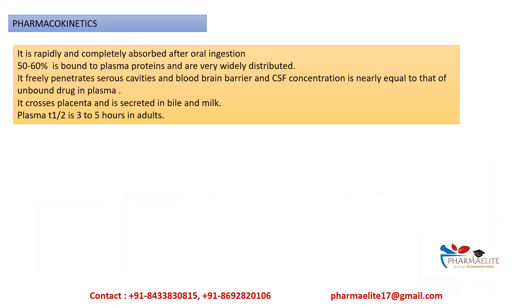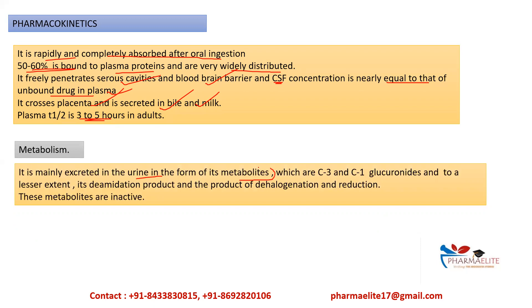Now we'll see the pharmacokinetics of chloramphenicol. It is rapidly and completely absorbed after oral ingestion. 50 to 60% is bound to plasma proteins and it is very widely distributed. It freely penetrates into serous cavities, even crossing the blood-brain barrier, and its CSF (cerebrospinal fluid) concentration is nearly equal to the unbound drug in plasma. It crosses the placenta and is secreted in bile and milk. Plasma half-life is around 3 to 5 hours in adults. It is mainly excreted in urine as metabolites, primarily C3 glucuronide conjugates (phase 2 metabolism), and to a lesser extent as deamidation products and products of dehalogenation and reduction. The metabolites are usually inactive.